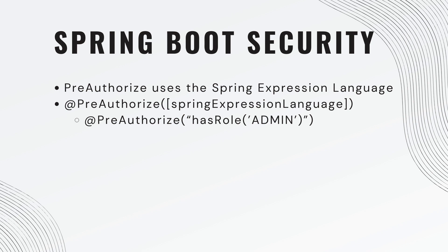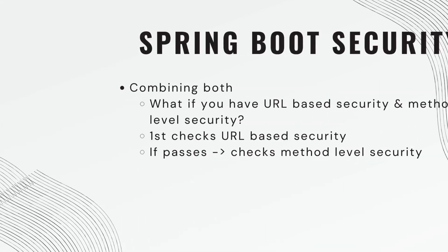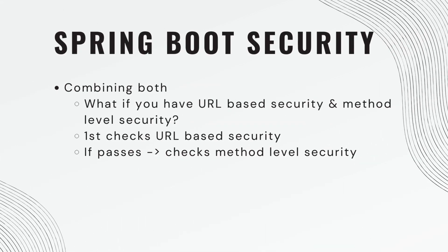So we're going to say hasRole of admin and Spring Expression Language will figure it out. You could combine both URL-based security and method level security. Spring Boot would first check the URL-based security, and then if that passes, it would check the method level security. That's something you can implement on your own if you wish.